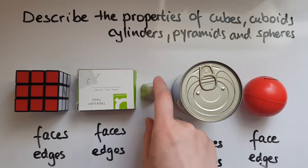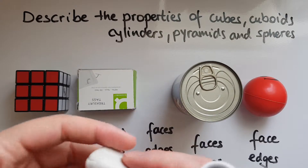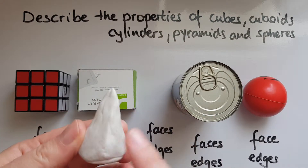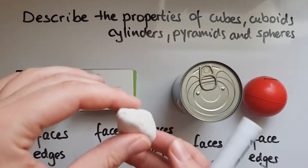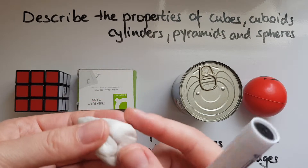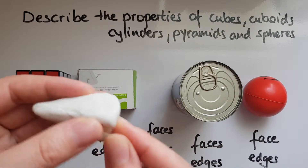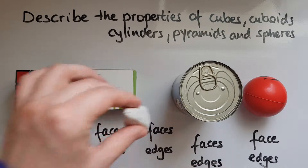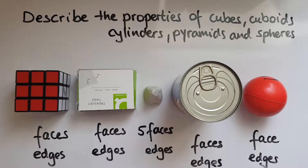There we have a pyramid. The pyramid has one, two, three, four, five faces. This is a square-based pyramid, because a triangular-based pyramid would have four faces. So this one has five faces.